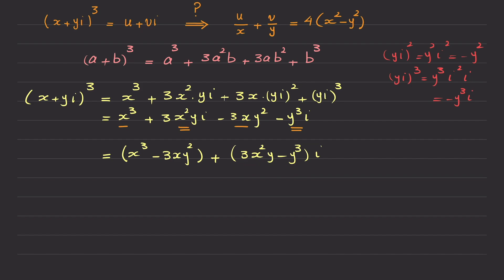So for example, if I give this equality name 1, and I give this name 2, so from comparing number 1 and number 2, I'm allowed to conclude that u is actually x³ - 3xy², and v is equal to 3x²y - y³.